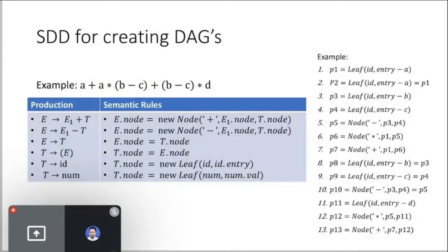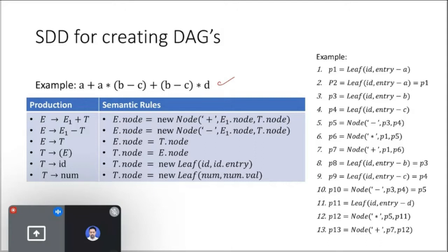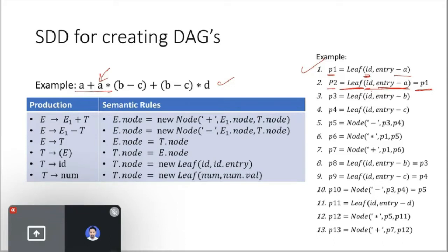For this given expression, the process works like this. First, we generate an ID for entering 'a'. Then we have a plus another 'a', so we call the leaf process for entry 'a'. The leaf function first searches whether an entry for 'a' already exists. It is found in p1, so it returns p1.